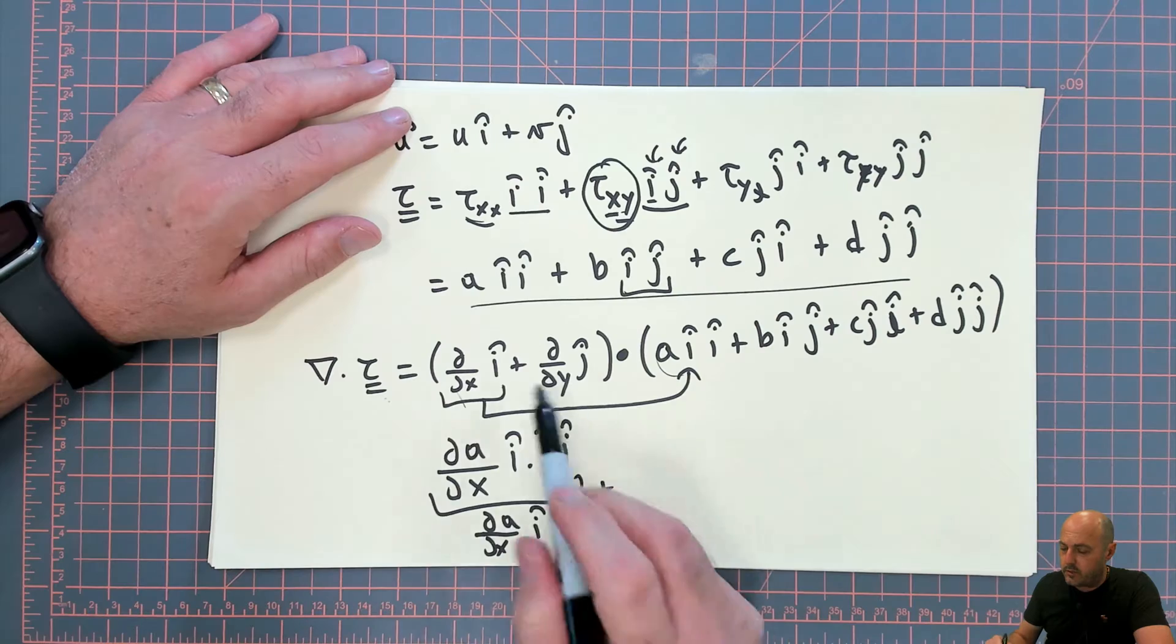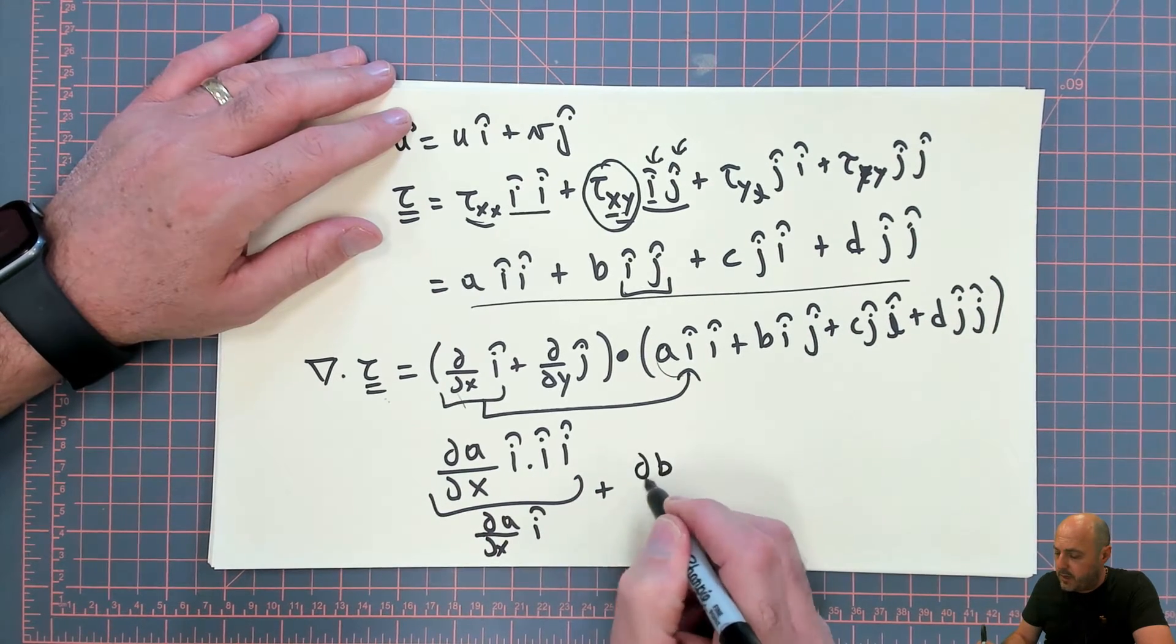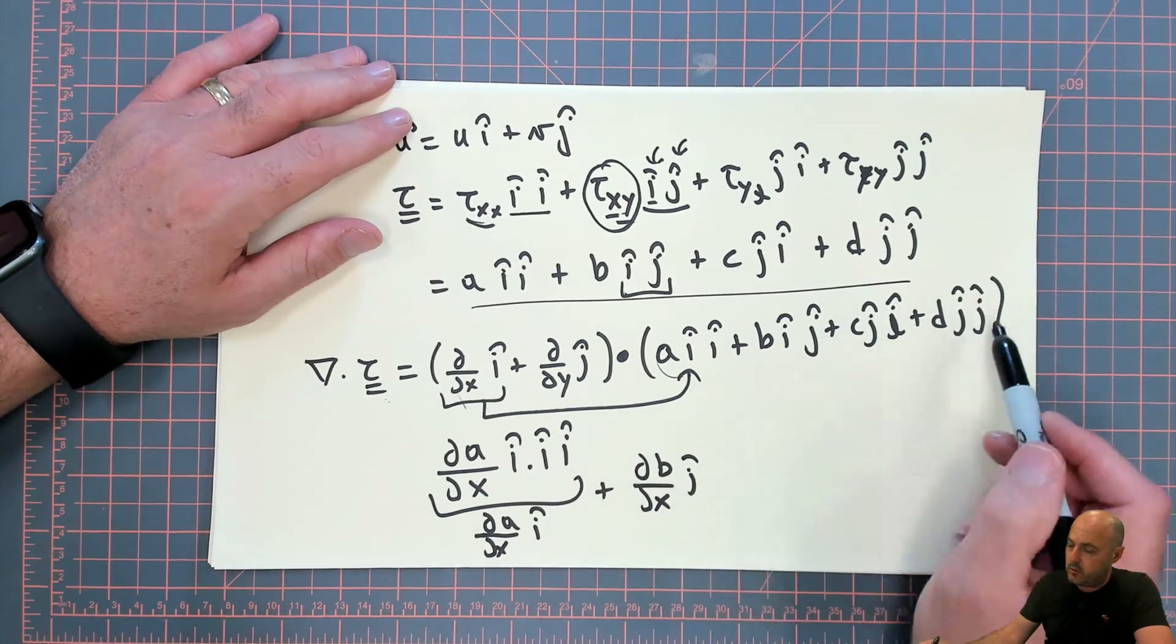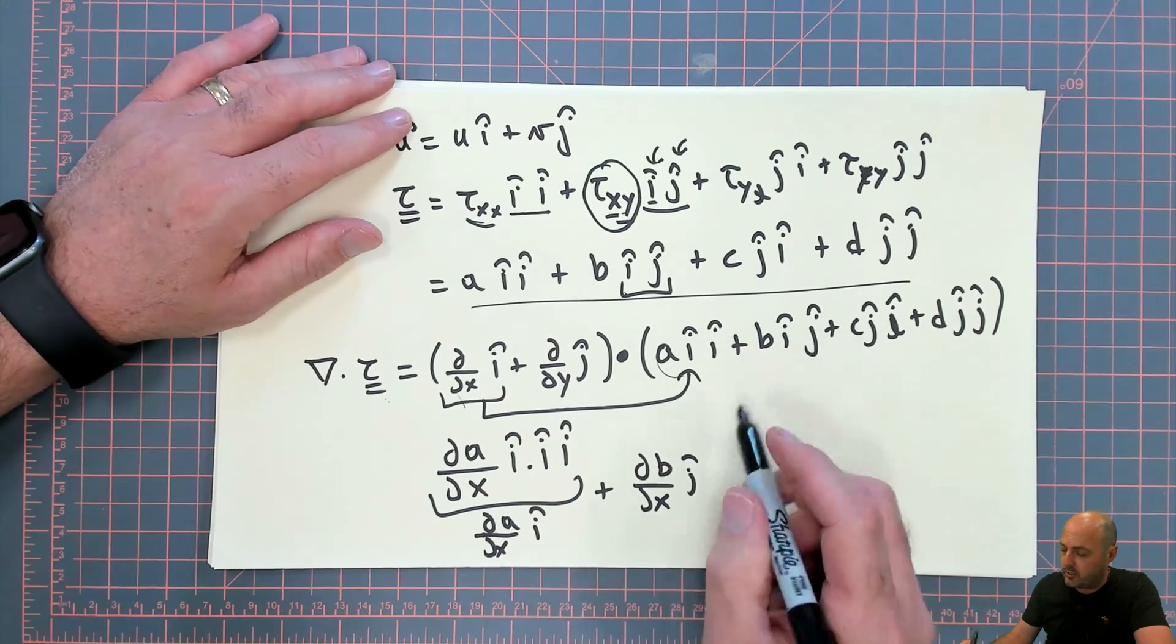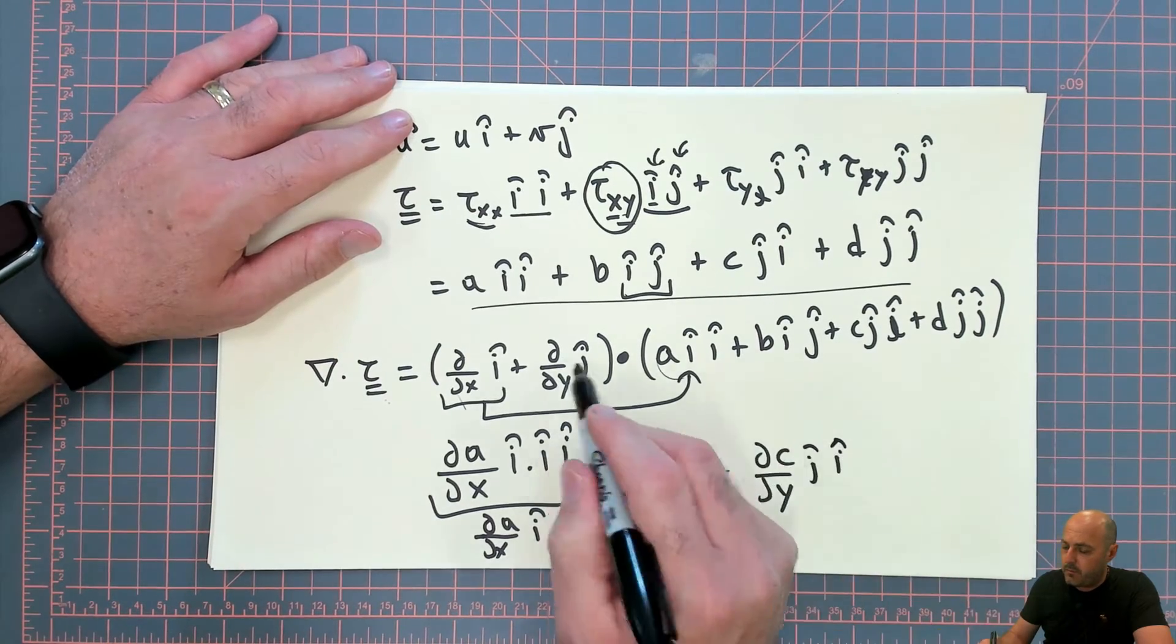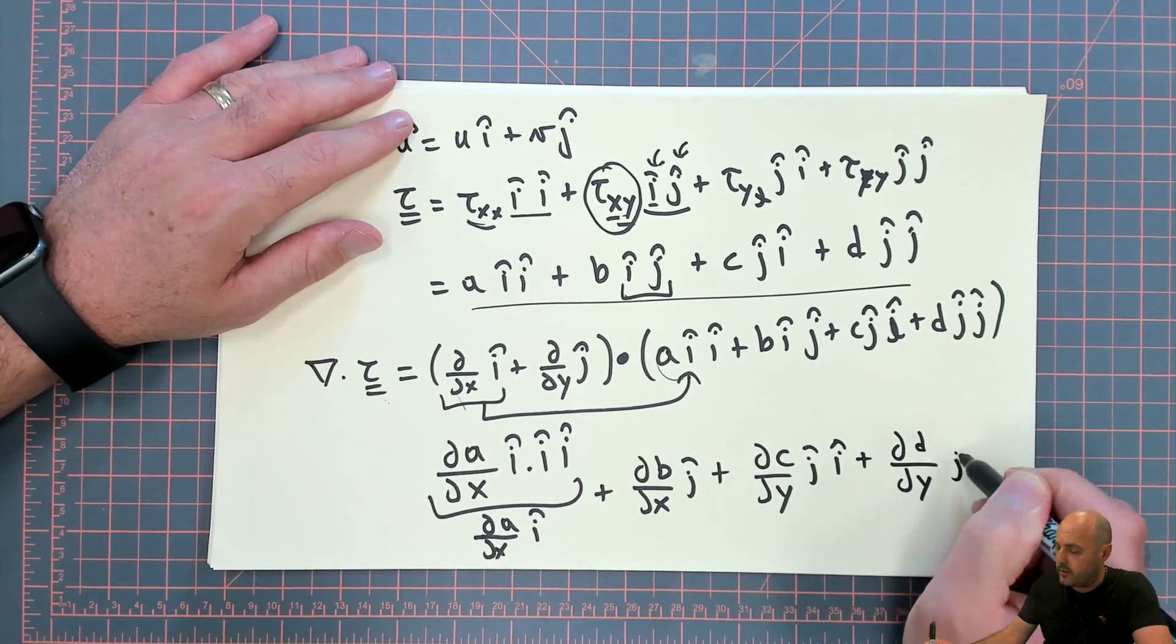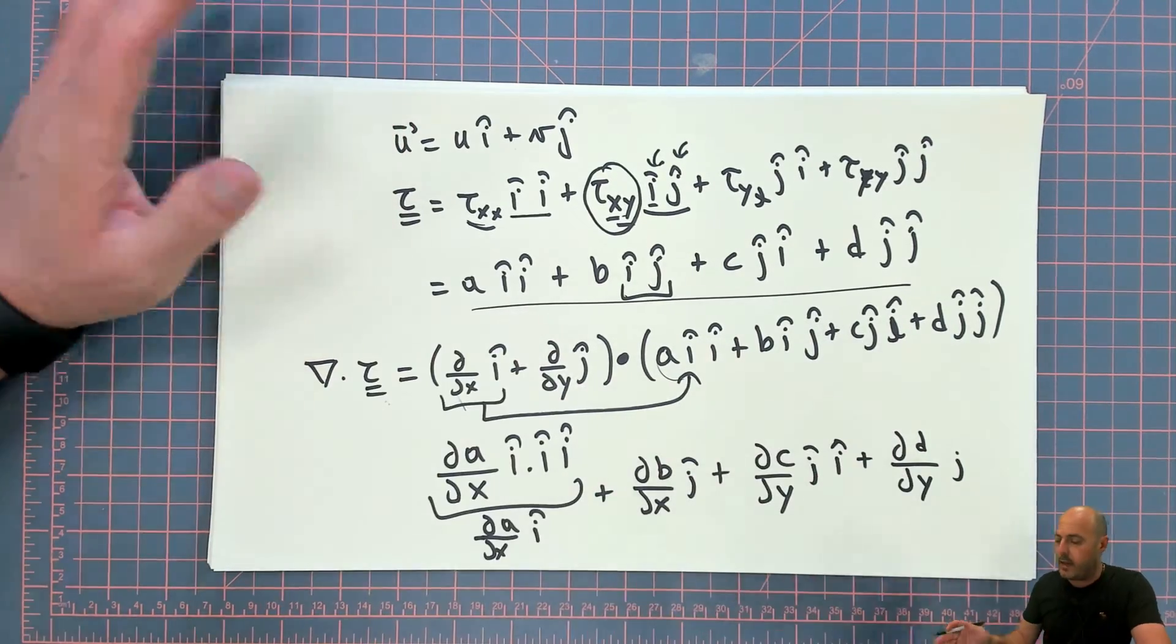then you can continue these operations, d/dx i dot i, so that gives you plus dB/dx j. And then i dot j is 0, i dot j is 0, j dot i is 0, j dot i is 0, then j dot j. So we get plus dC/dy j i plus dD/dy j, because j dot j is 1. And that's how you carry out these operations.